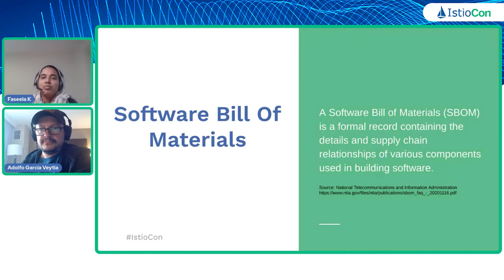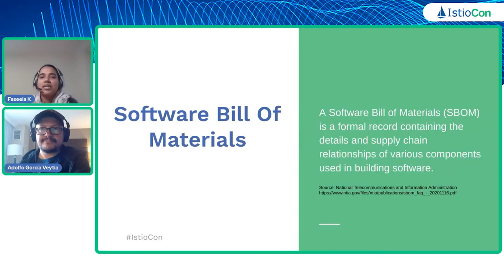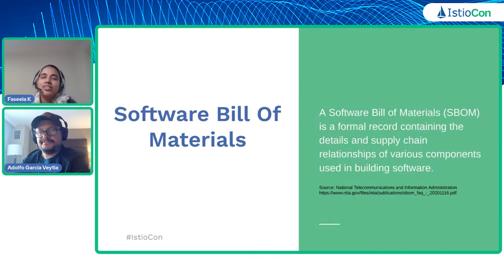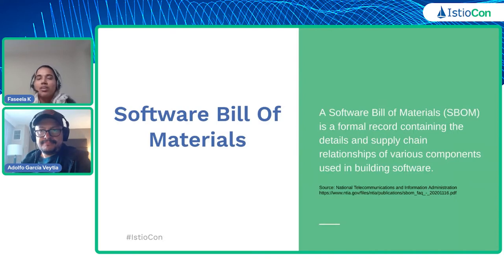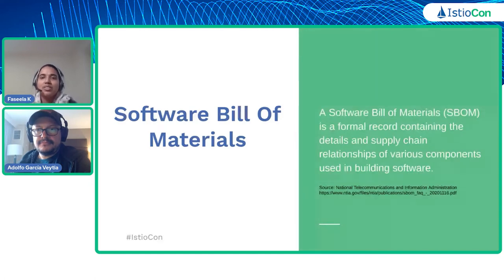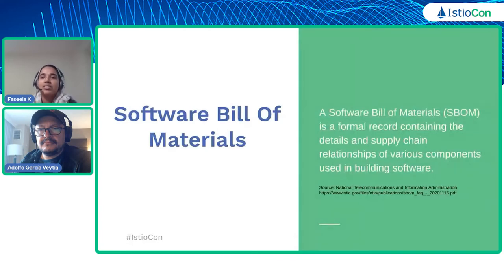A Software Bill of Materials is a formal record containing the details and supply chain relationships of various components used in building software, including open source components. In the wake of the SolarWinds attack, an executive order was published by the White House advocating for mandatory software bills of materials to increase software transparency and counter supply chain attacks. For supply chain security, the foundation has always been trust rather than transparency, and SBOMs provide a stepping stone towards achieving that transparency.